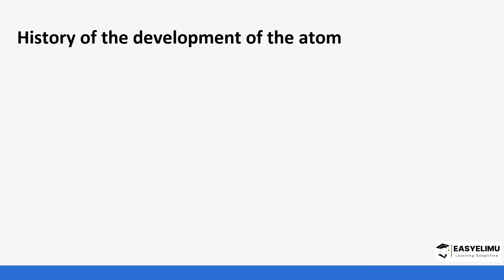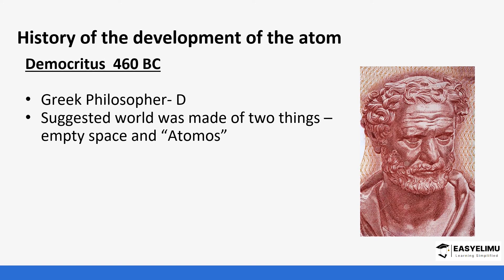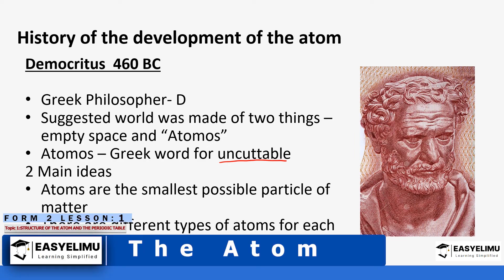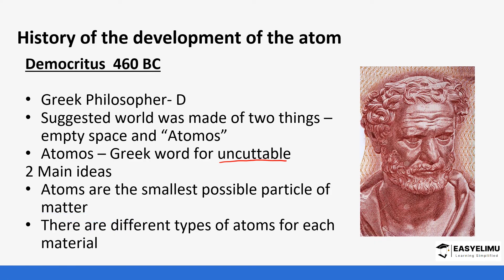Let's start with the earliest scientist to discover the atom. We have Democritus, who was a Greek philosopher. He talked about the atom being indestructible — he referred to it as 'atomos,' meaning uncutterable. Even if you cut it into smaller and smaller pieces it remains the same atom. He said atoms are the smallest possible particle in matter and that different materials had different types of atoms.